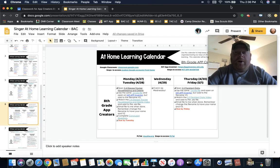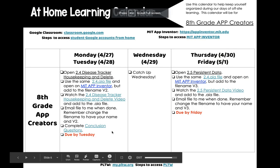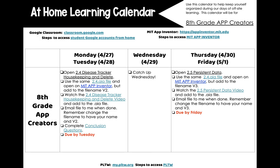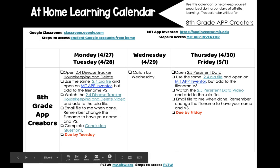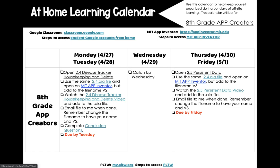So what did you possibly miss last week? Last week we were finishing up the 2.5 stuff. This week you're going to finish the rest of it. But you had to turn in your disease tracker, housekeeping, and delete. And then 2.5, which is still the 2.4 file — that's why I wanted you to change your file name with V3 at the end, so I know that you're turning in the persistent data. This is where you're going to start putting together the tiny database.